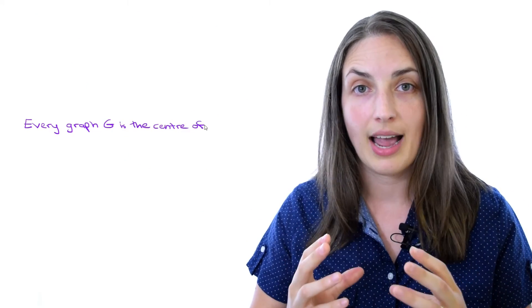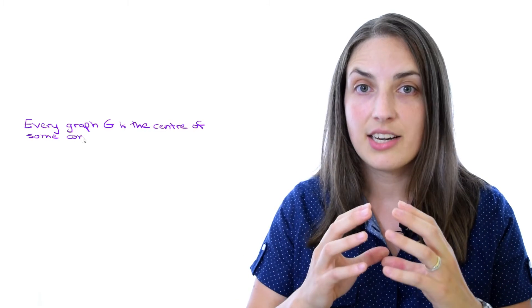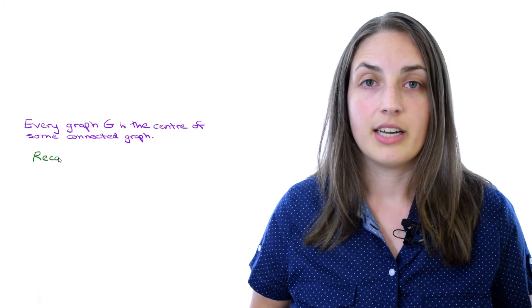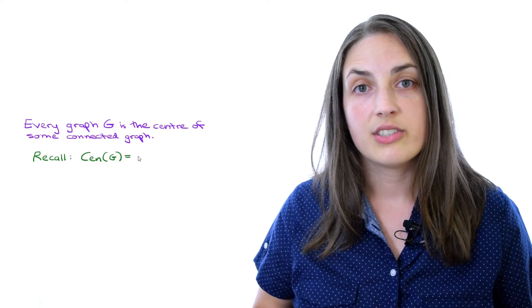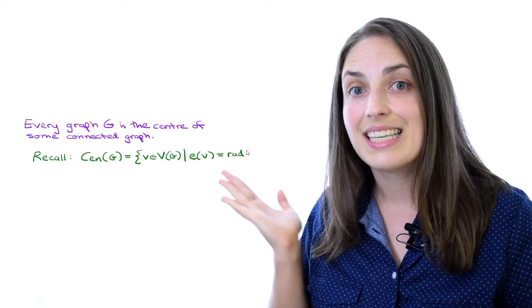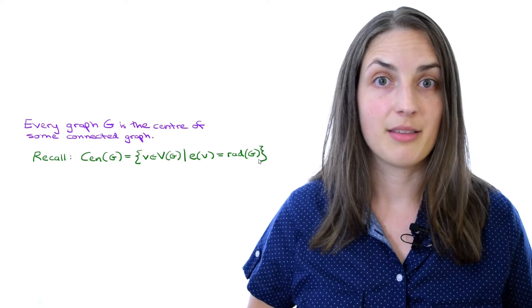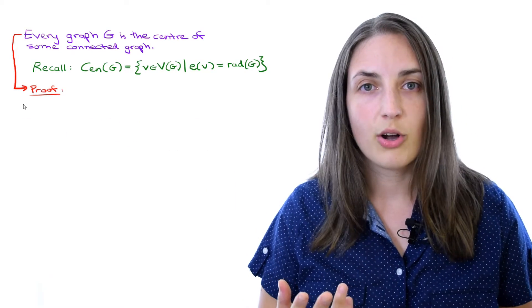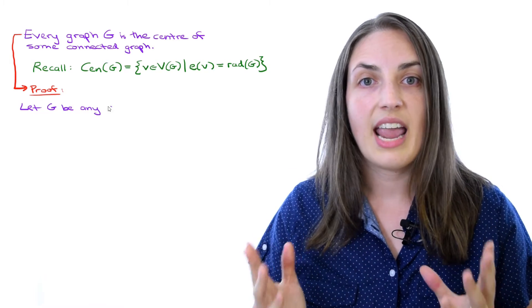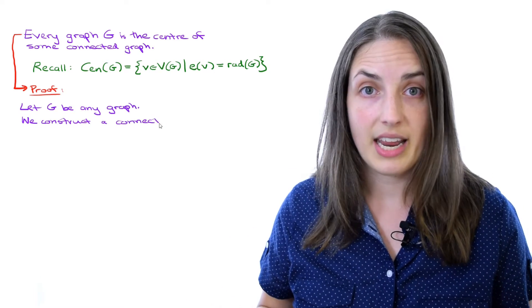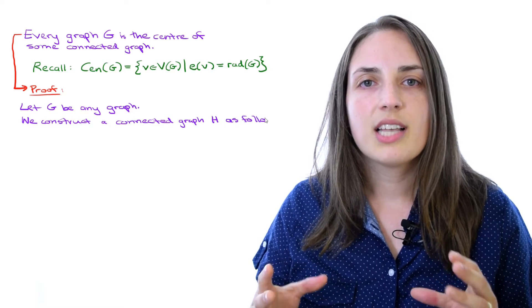For our next example, we're going to show that any given graph is the center of some connected graph. Remember what the center is — it's the set of all vertices whose eccentricity is equal to the radius. The proof will go like this: we start off with any given graph G, and we want to build a new graph, let's call it H.